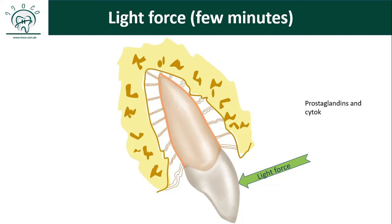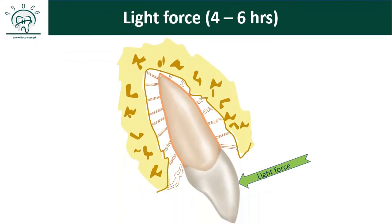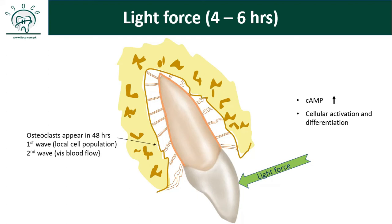Within a few minutes after light force application, prostaglandins and cytokines are released in the periodontal area. These cytokines and prostaglandins activate cells through the second messenger system, which is cyclic AMP. After light force application, recruitment of osteoclasts begins within 48 hours. Cells already present in the PDL space get activated — this is called the first wave of osteoclasts — and through blood flow, more osteoclasts migrate in, called the second wave. However, force must be applied for at least four to six hours per day, as cyclic AMP is not sufficiently increased below this duration.